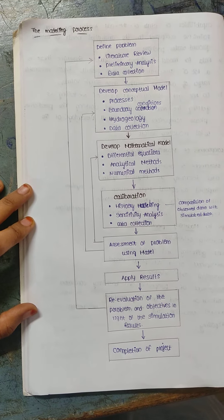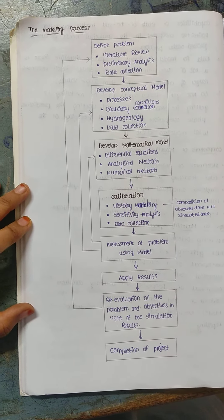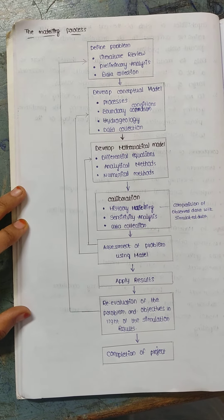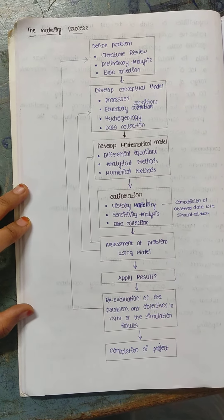Calibration includes history and measuring method. How is the running of sensitivity? This involves comparing observed data with simulated data.